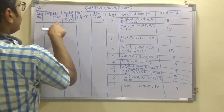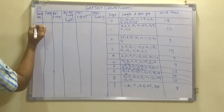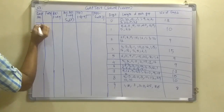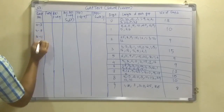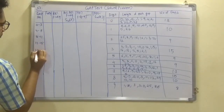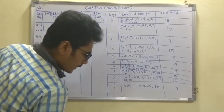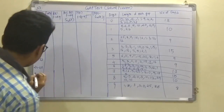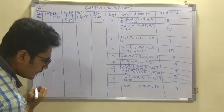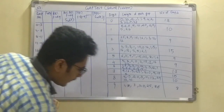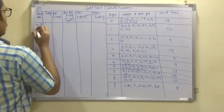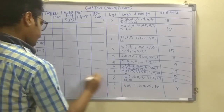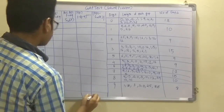There are 6 columns in total. The gap length intervals are: 0–3, 4–7, 8–11, 12–15, 16–19, 20–23, 24–27, 28–31, 32–35, and 36–39, giving 10 rows.